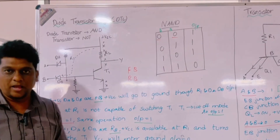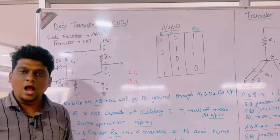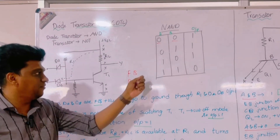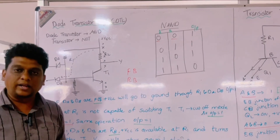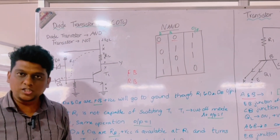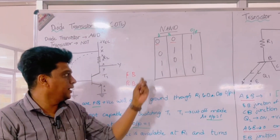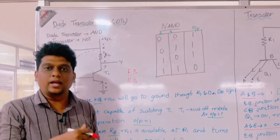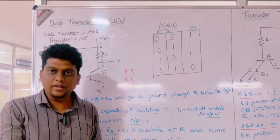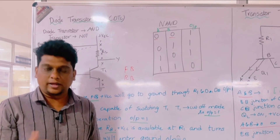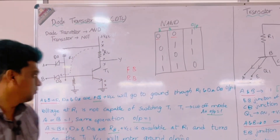Forward bias means connecting the positive terminal with holes and the negative terminal with electrons — this allows current to flow. Reverse bias means connecting the negative terminal with holes and the positive terminal with electrons, causing attraction between opposite poles rather than current flow.